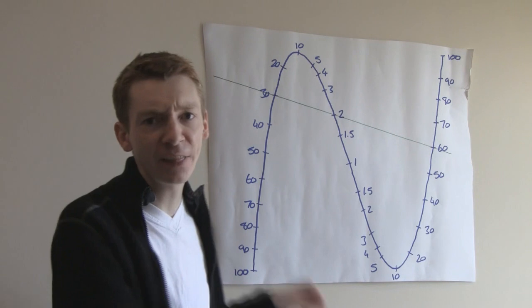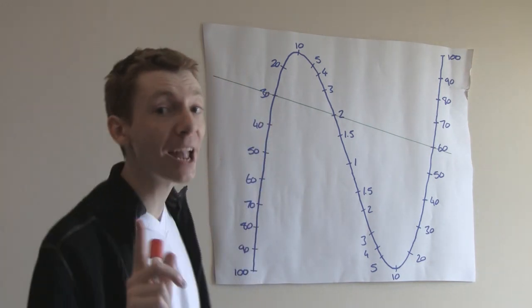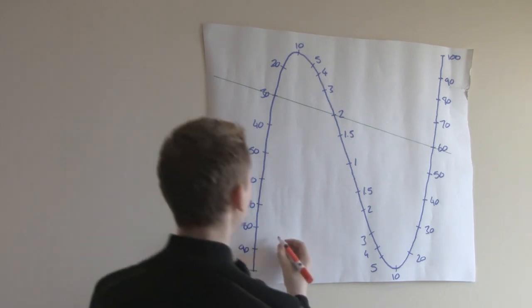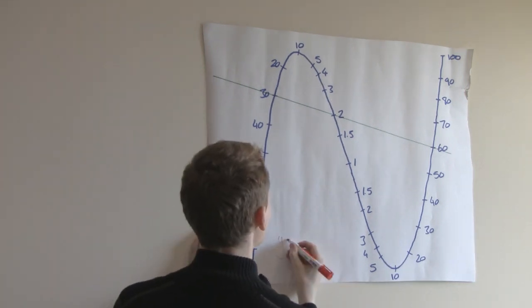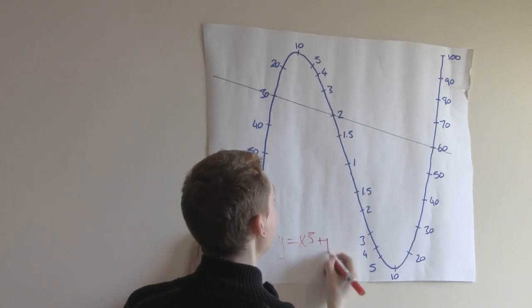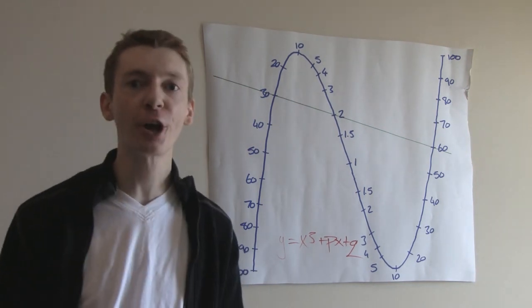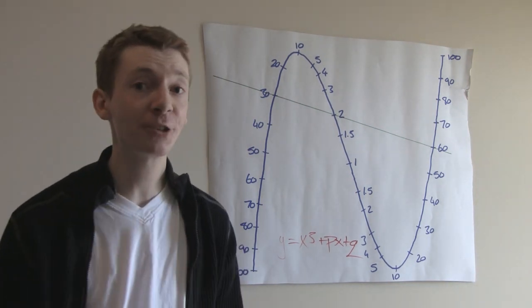But let's pretend that this is just a general cubic curve, but with no x squared term. So it's going to look something like y equals x cubed plus px plus q. So that's just a general cubic curve with no x squared term.